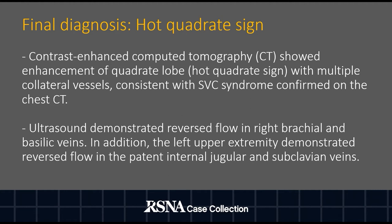Ultrasound demonstrated reverse flow in the right brachial and basilic veins. In addition, the left upper extremity demonstrated reverse flow in the patent internal jugular and subclavian veins. Contrast-enhanced CT of the chest also demonstrated superior vena cava occlusion with collateral vessels.